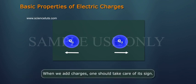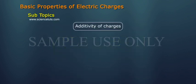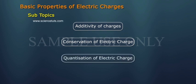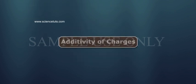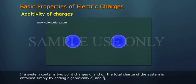When we add charges, one should take care of its sign. Subtopics: additivity of charges, conservation of electric charge, and quantization of electric charge. Additivity of charges: If a system contains two point charges q1 and q2, the total charge of the system is obtained simply by adding algebraically q1 and q2.